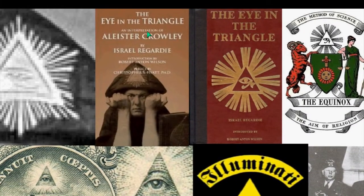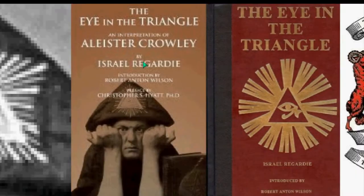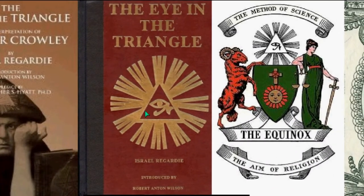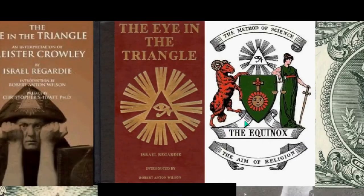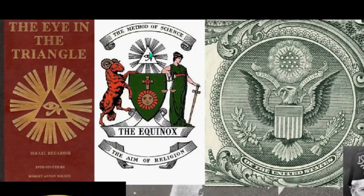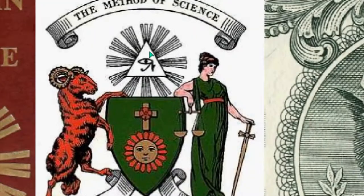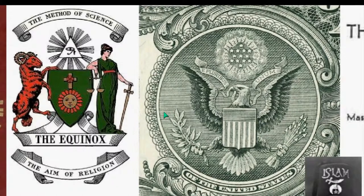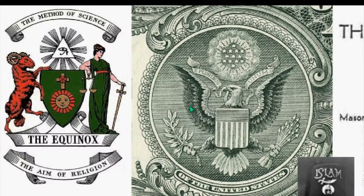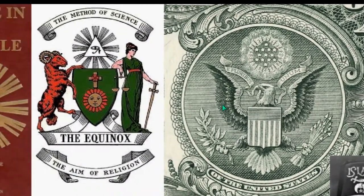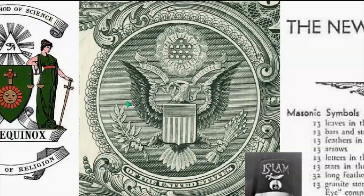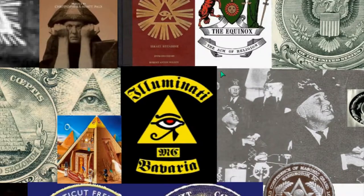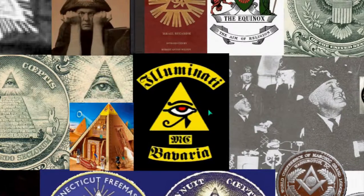You can see the eye in the triangle, which Aleister Crowley has written about or illustrated. Again, you can see the Egyptian pyramid. You can also see the reverence for science — I know it sounds like a good thing, but their science is in a different category. Many scientists are into the occult, and you'll see that a little bit later.